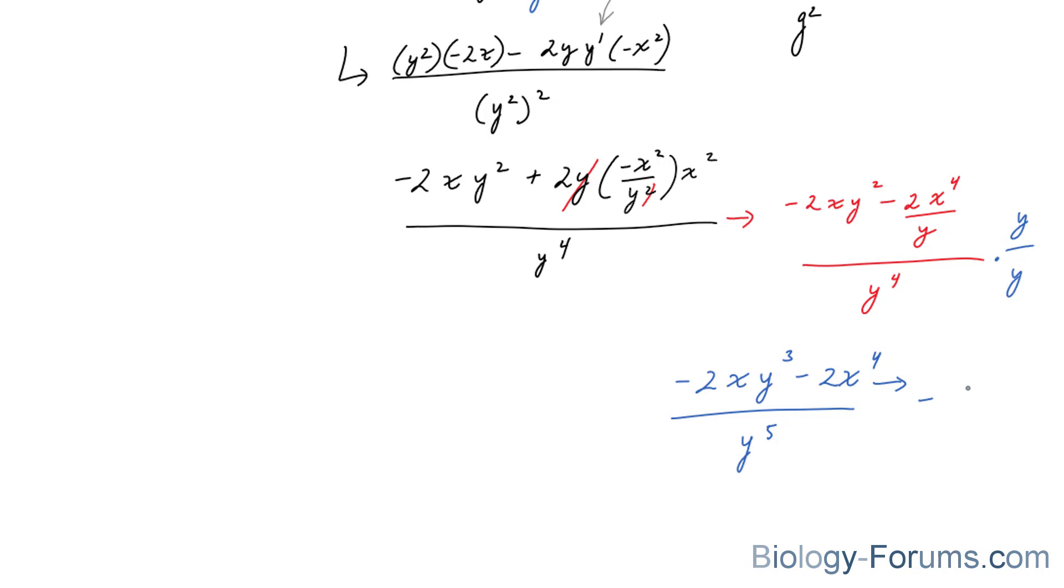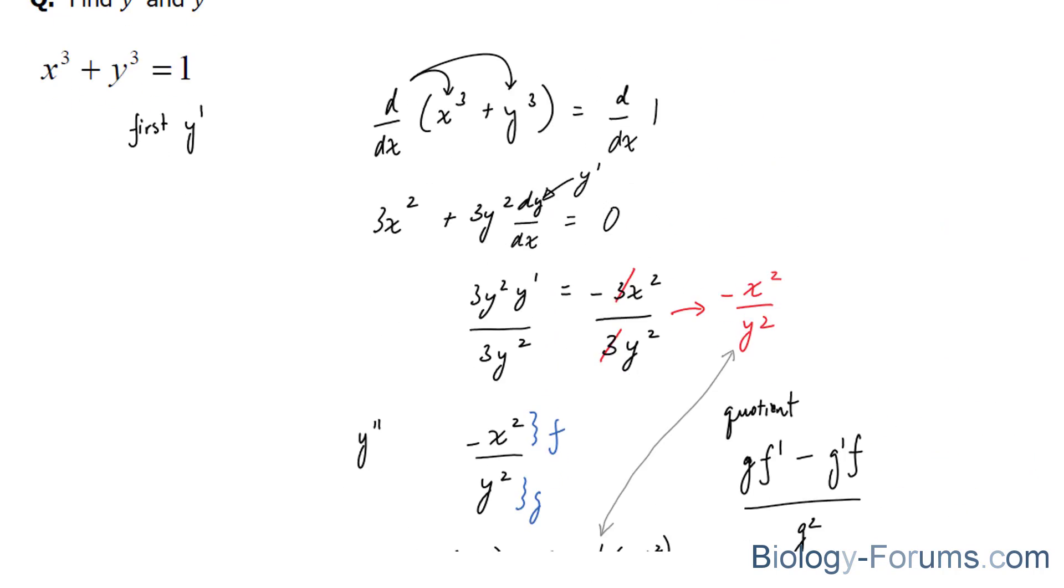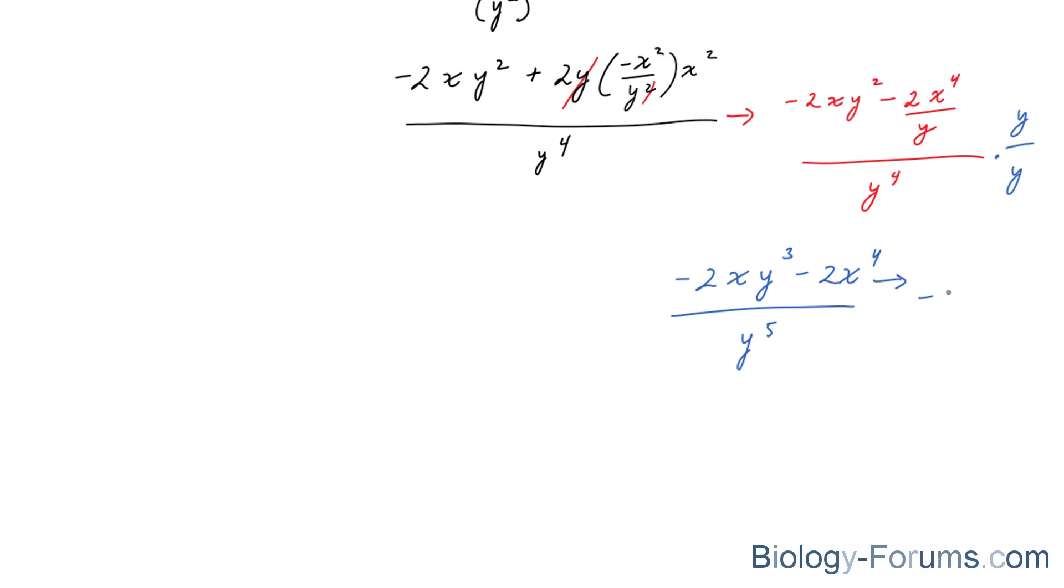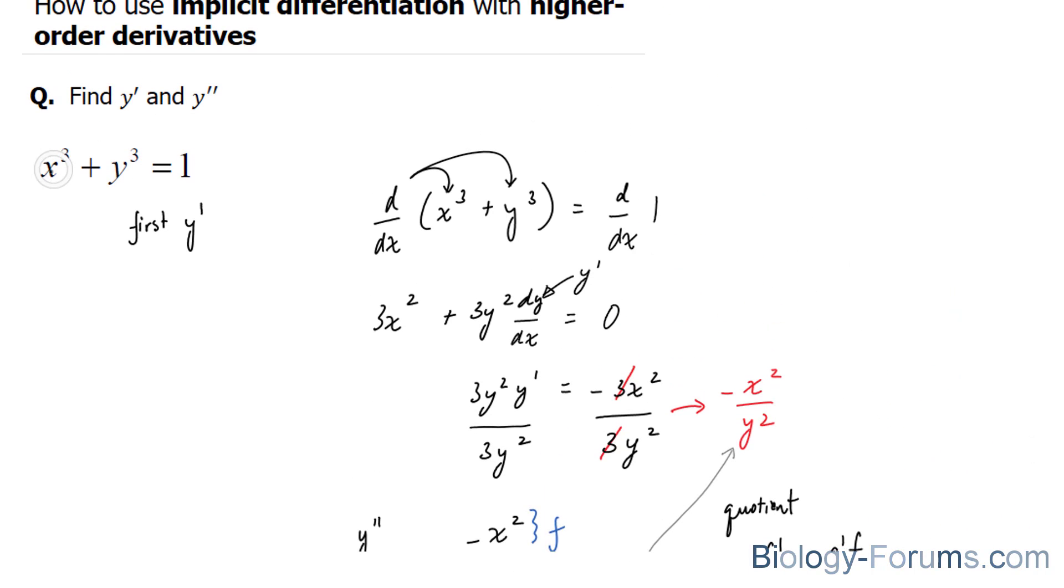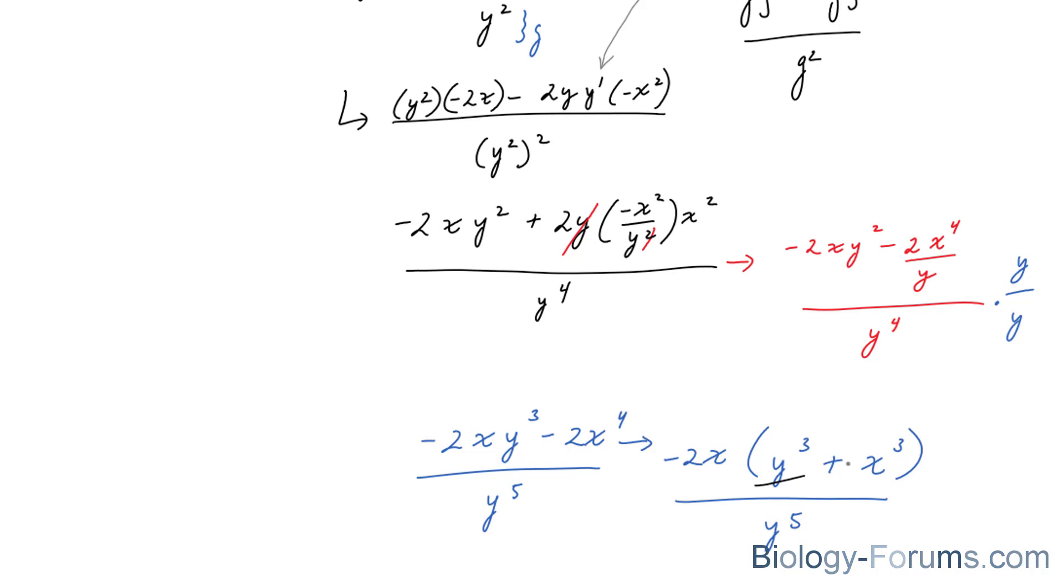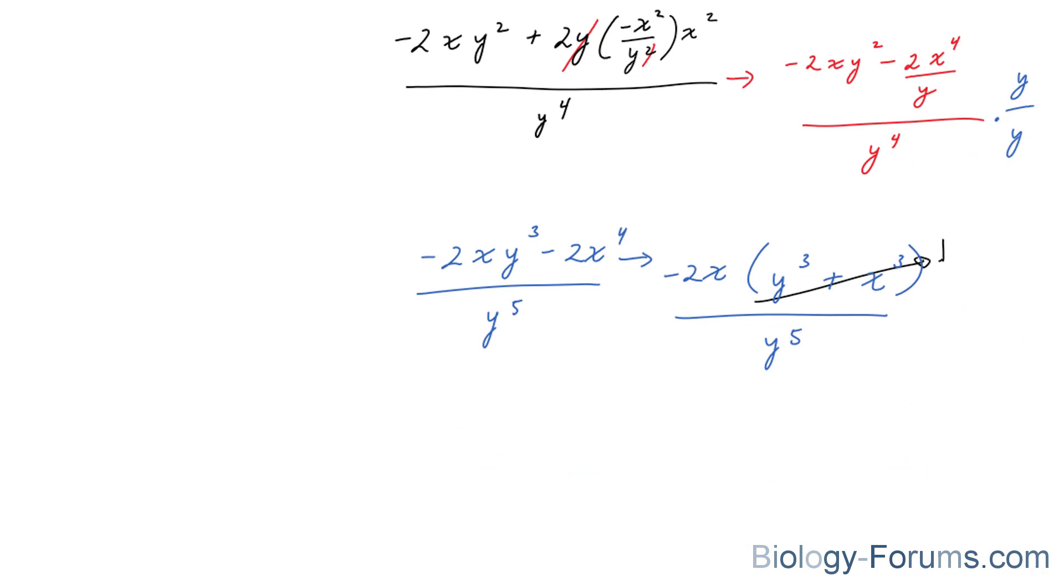And you can even go further by factoring out some important parts of both of these terms. Notice, both of them have a negative 2 in common. Take a look at the original equation. Notice how both these terms have a negative 2 in common. So pull out a negative 2. They both have an x in common. So pull out that x. And you're left with y to the power of 3 plus x to the power of 3 over y to the power of 5. Now, the reason why I went up to see what the original equation was, well, because the original equation said that x to the power of 3 plus y to the power of 3 is equal to 1. So this goes to 1. So your final, final answer is negative 2x over y to the power of 5.